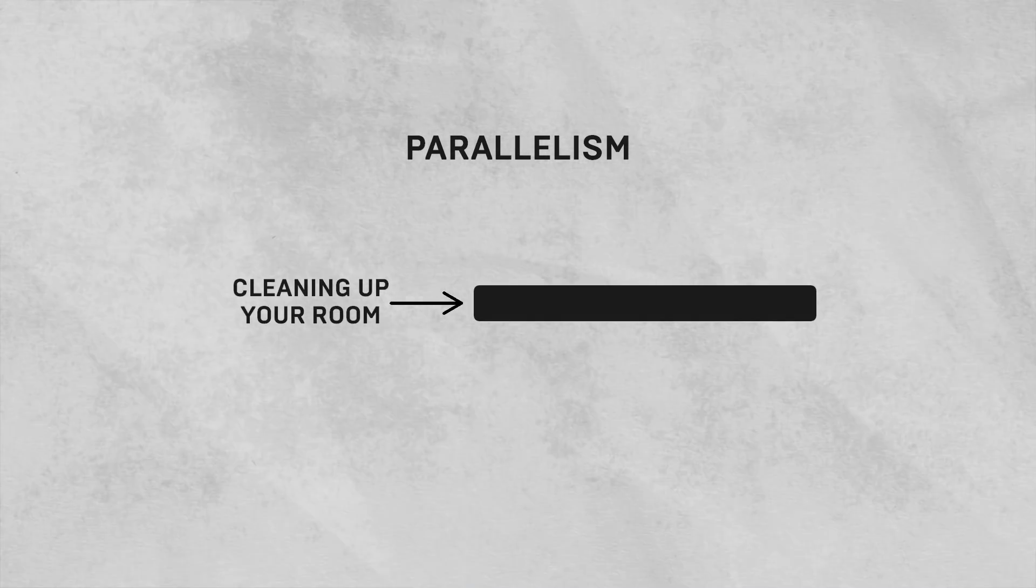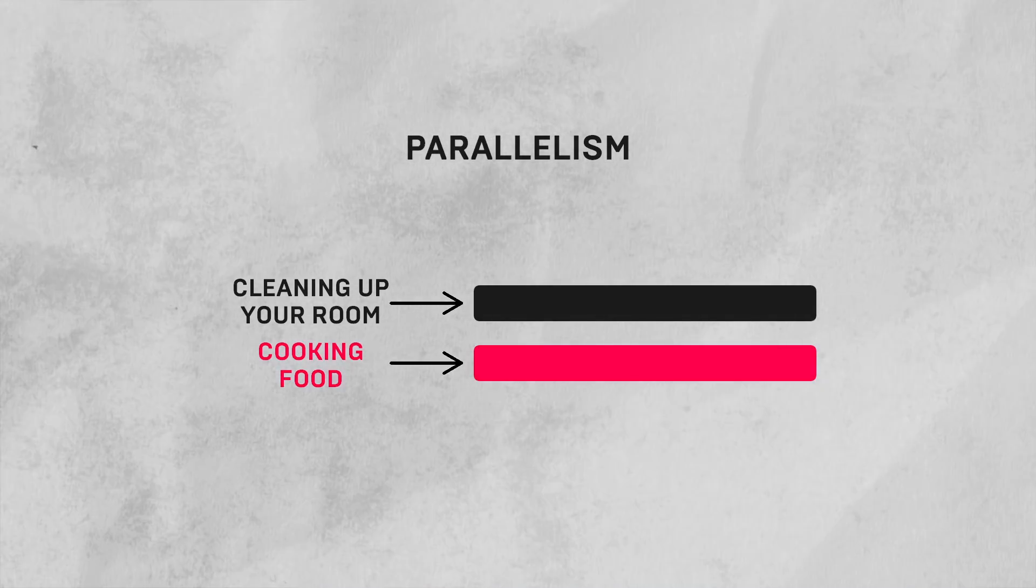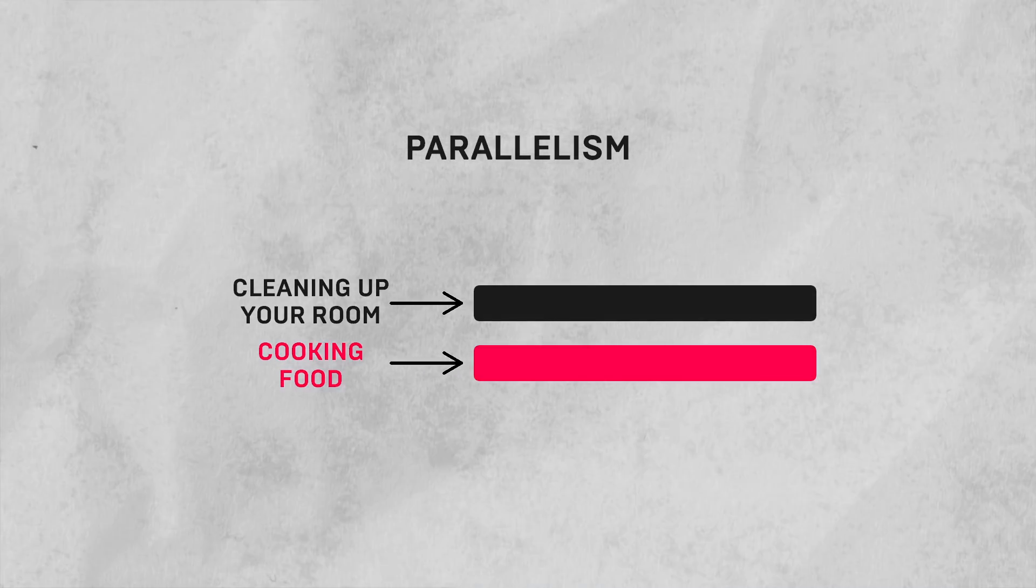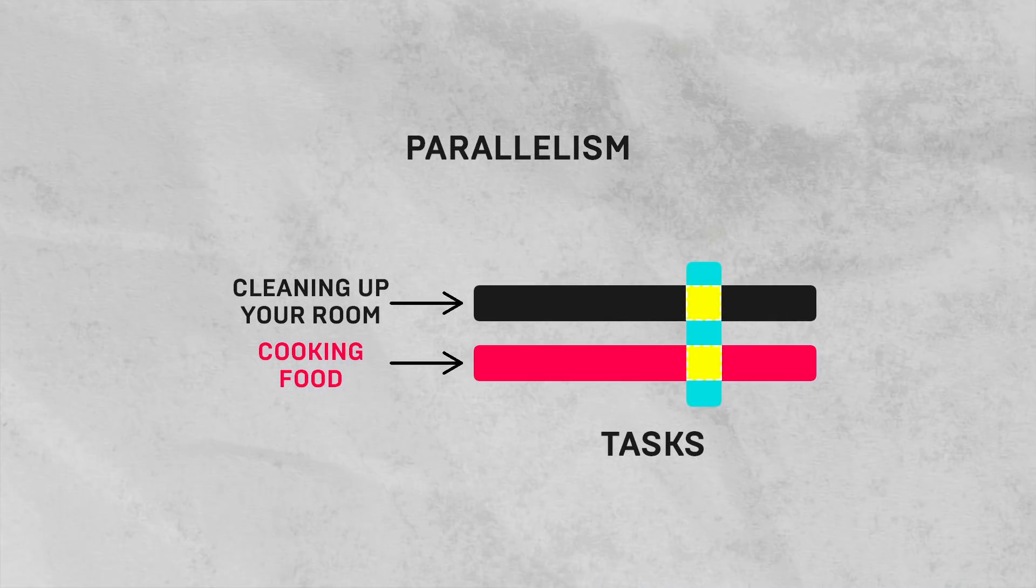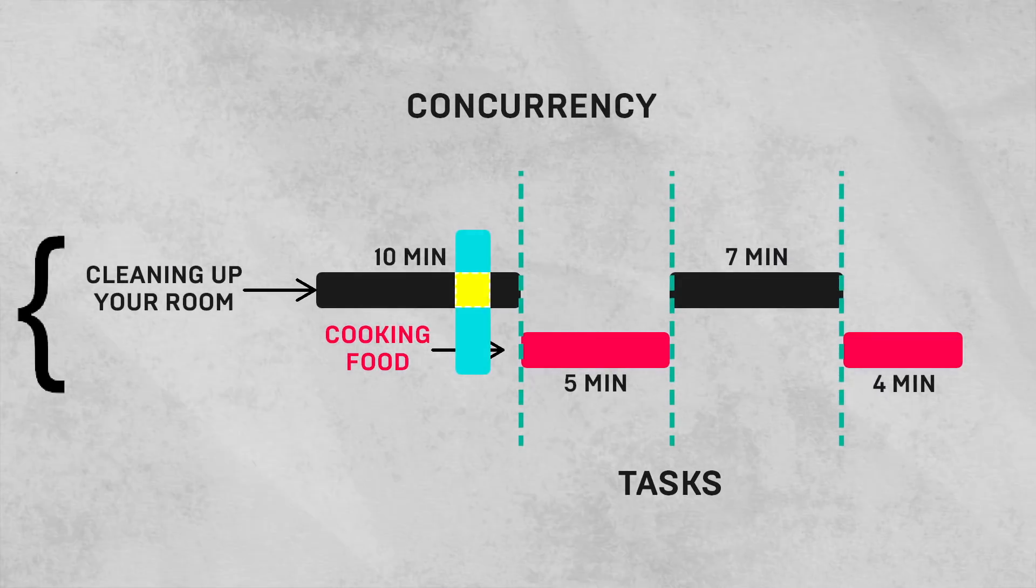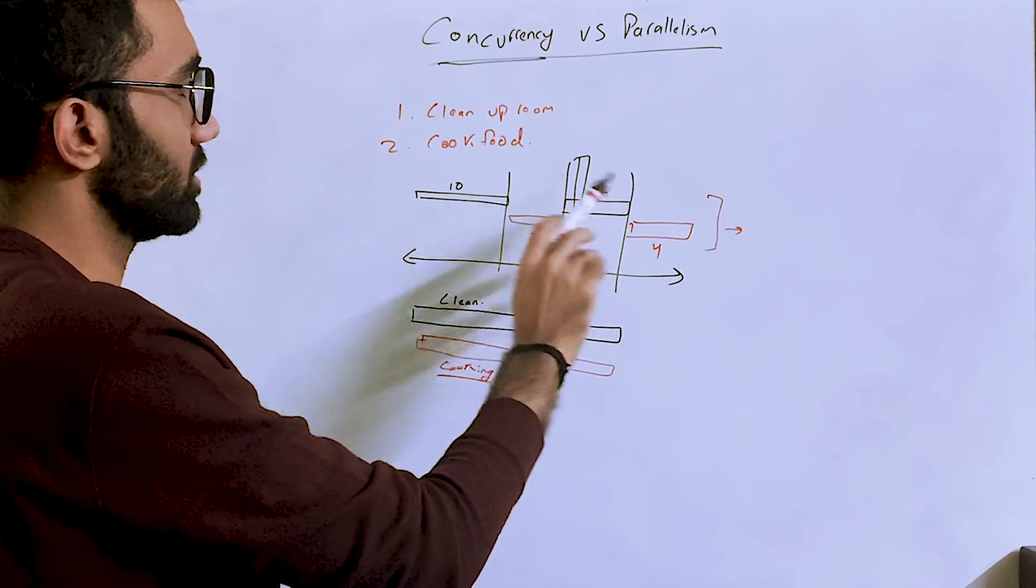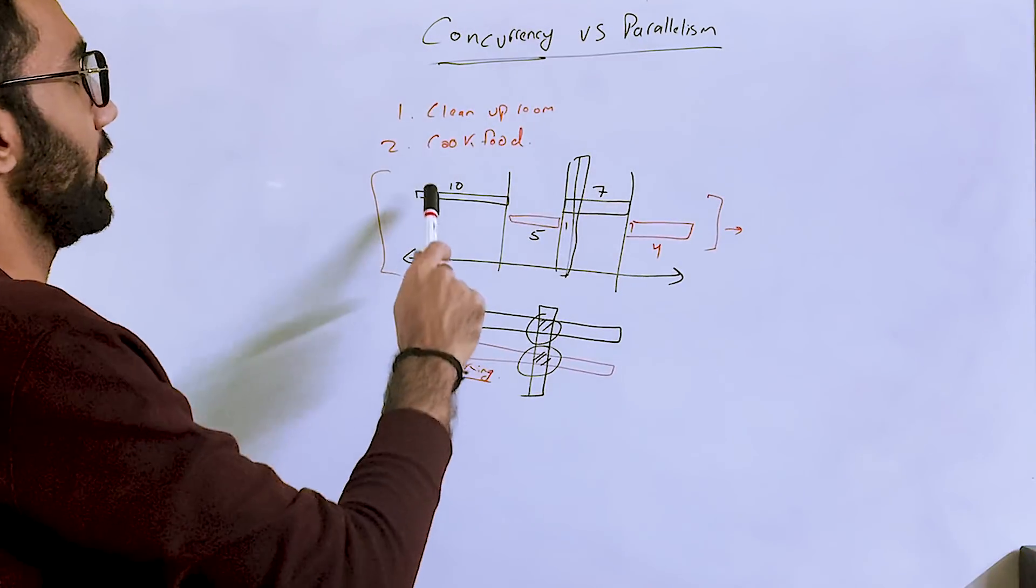Parallelism, on the other hand, means that you and you alone are actually cleaning up the room, and someone else—or maybe you from another universe—is actually cooking food for you. This is true parallelism, where for a given time slice, both tasks are happening. In concurrency, for a given time slice, you would never see both tasks happening.